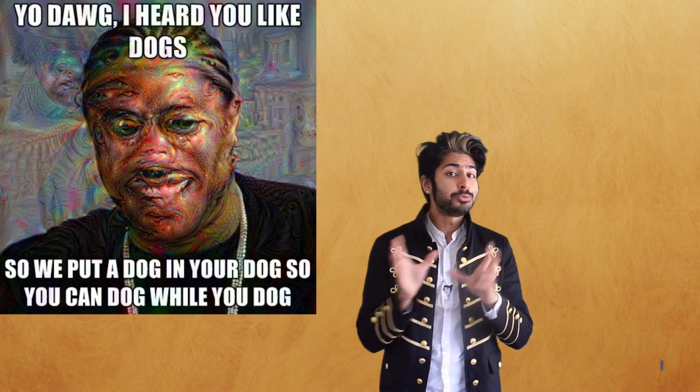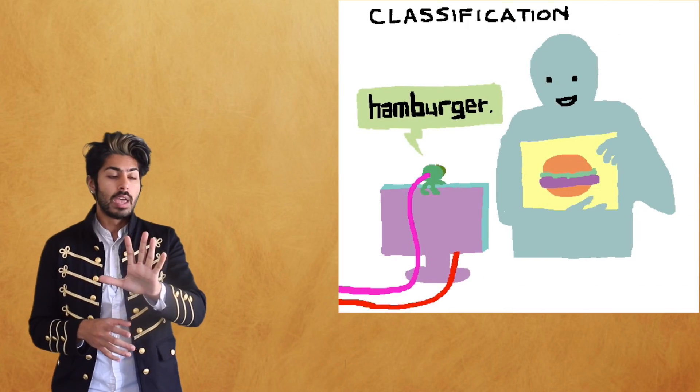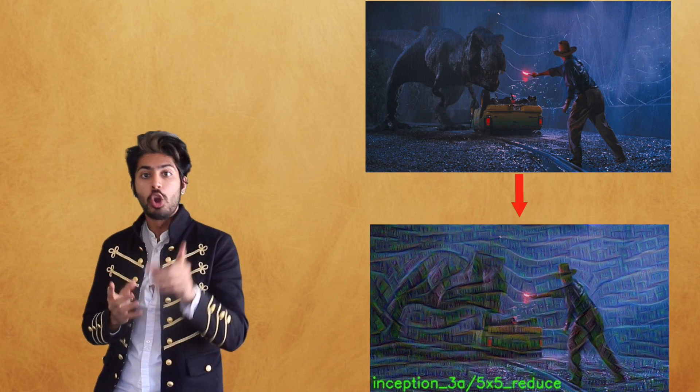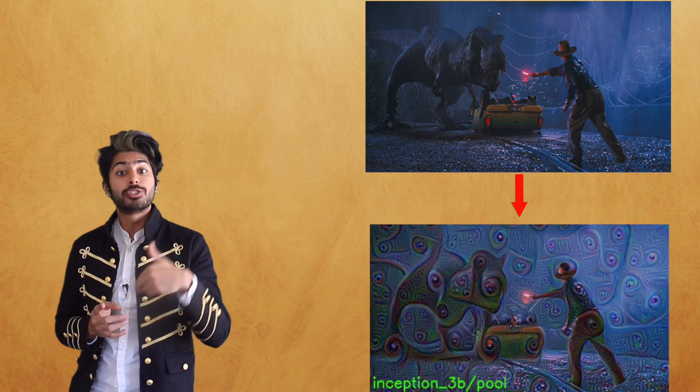Fast forward to 2015, when Google released DeepDream, the internet went crazy. They trained a convolutional net to classify images, then use an optimization technique to enhance patterns in the input image rather than its own weights based on what it had learned.